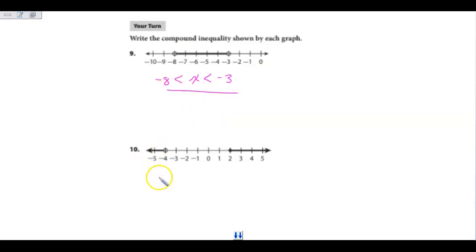When I take a look at number 10, this is telling me I'm going to use the word OR because there is a gap between the two points. So we have X is less than, yes, less than negative 4 because it's open. This one's closed.